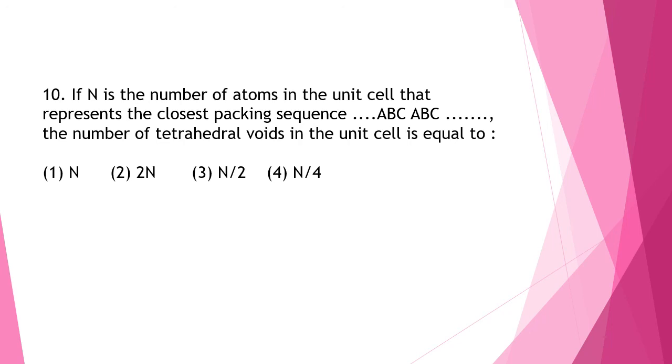So, just as you have given a sequence, ABC ABC, ABC sequence becomes FCC unit cell. In the FCC unit cell, the number of atoms in the unit cell is 4. So n is equal to 4.